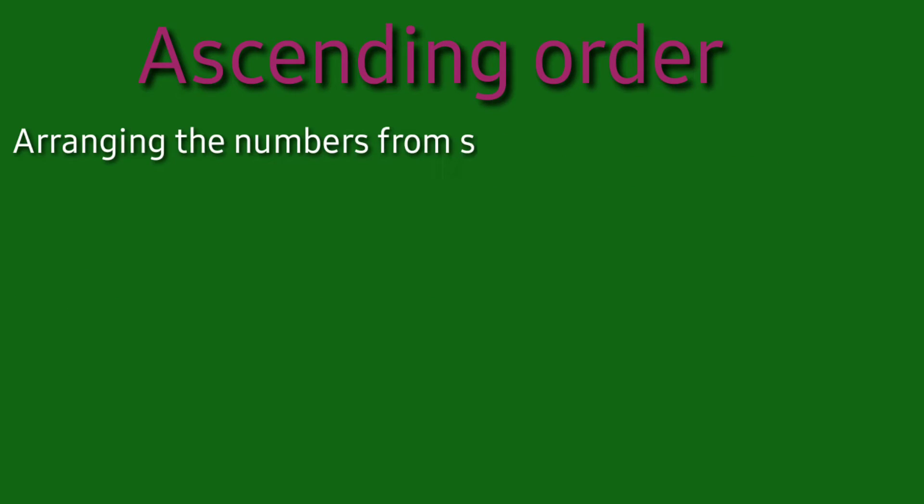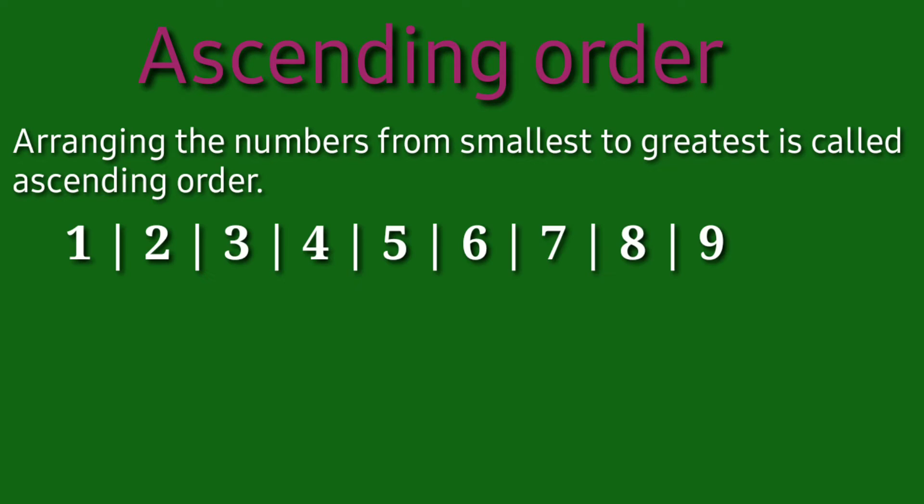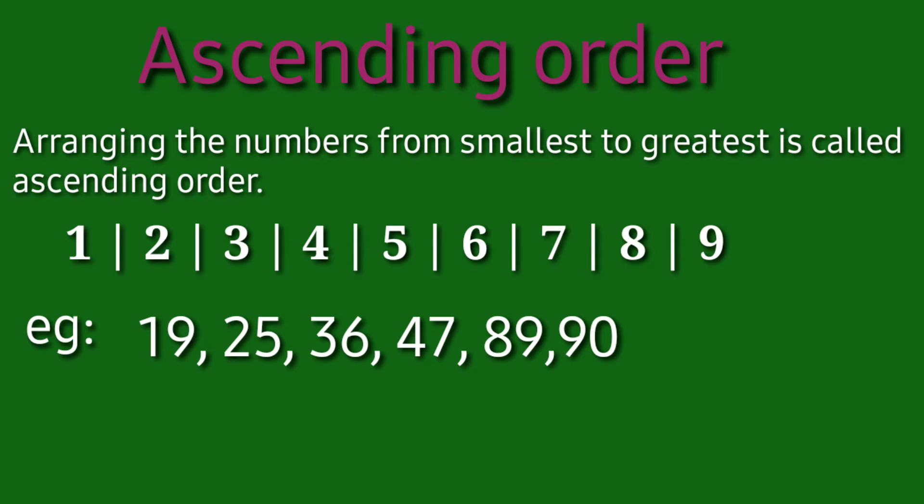Here is the ascending order. Arranging the numbers from the smallest to the greatest is called ascending order. Here the numbers are arranged from the smallest to the greatest. Let us have an example: 19, 25, 36, 47, 18, and 90.